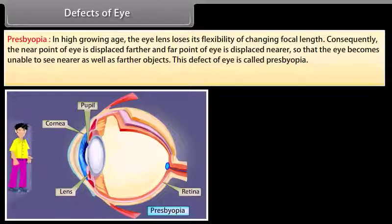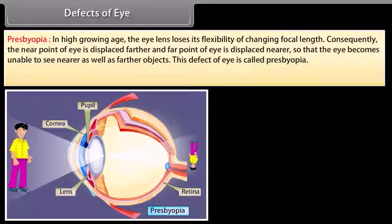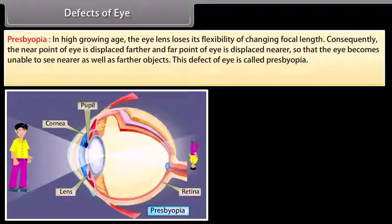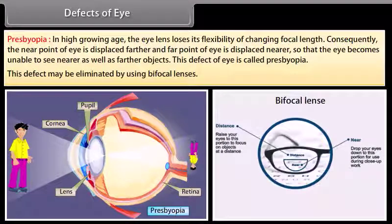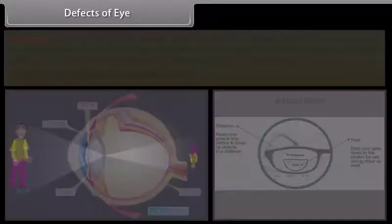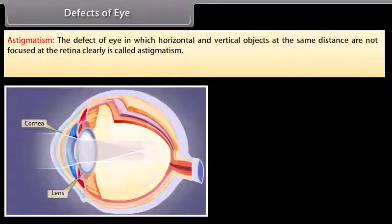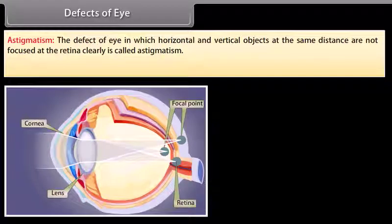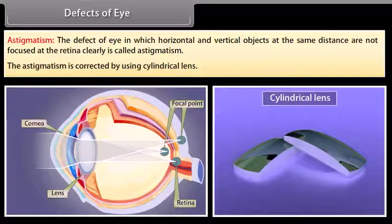Presbyopia: In old age, the eye lens loses its flexibility of changing focal length. Consequently, the near point of the eye is displaced farther and the far point is displaced nearer, so the eye becomes unable to see near or far objects clearly. This defect is called presbyopia and may be eliminated by using bifocal lenses. Astigmatism is a defect in which horizontal and vertical objects at the same distance are not focused clearly on the retina, and it is corrected by using cylindrical lenses.